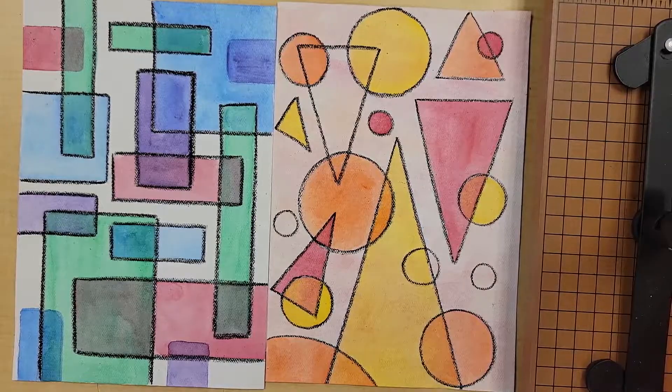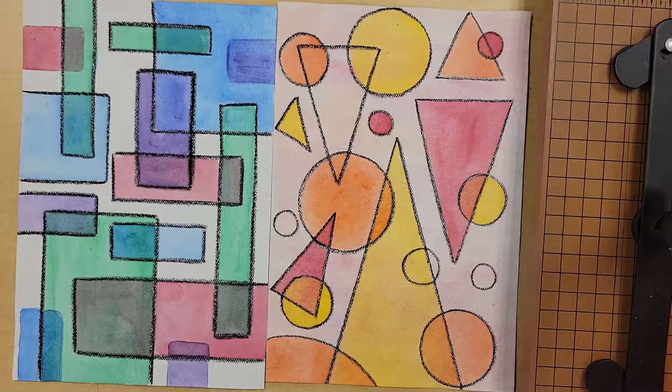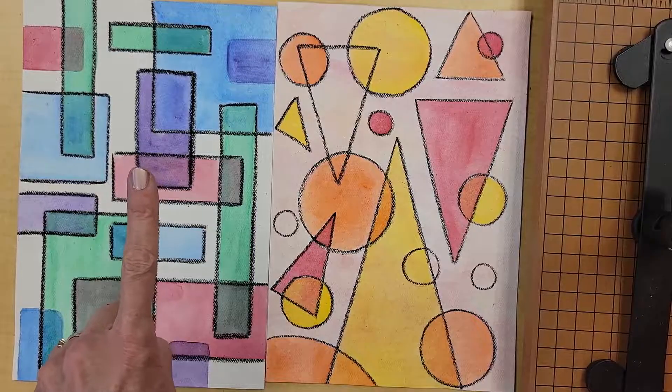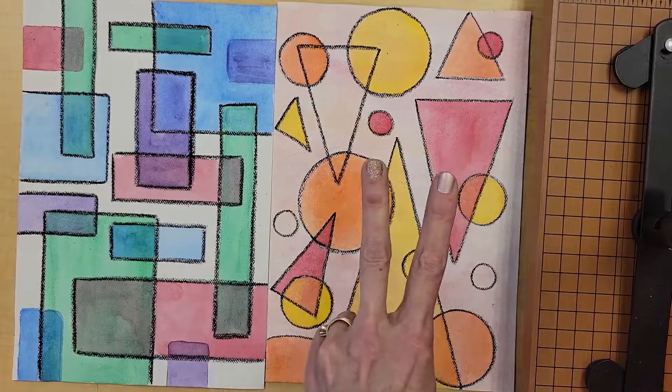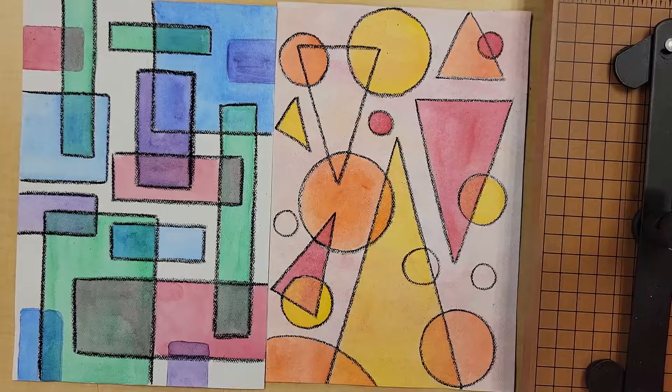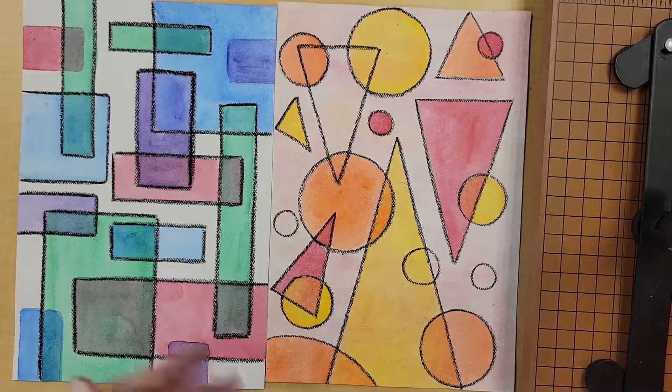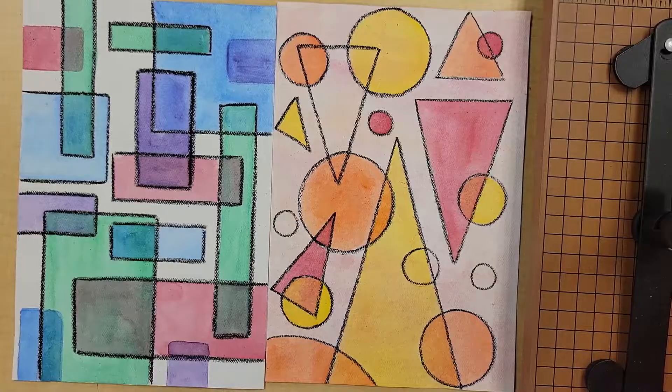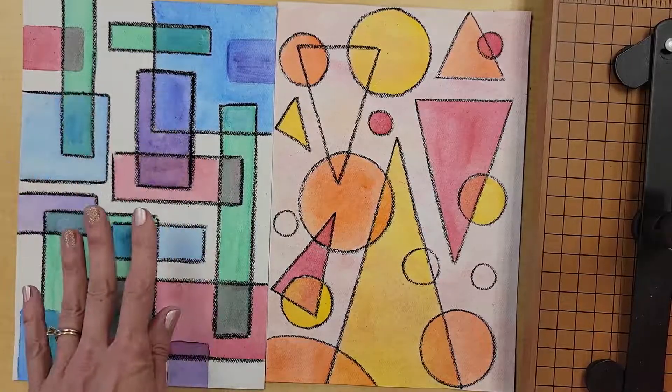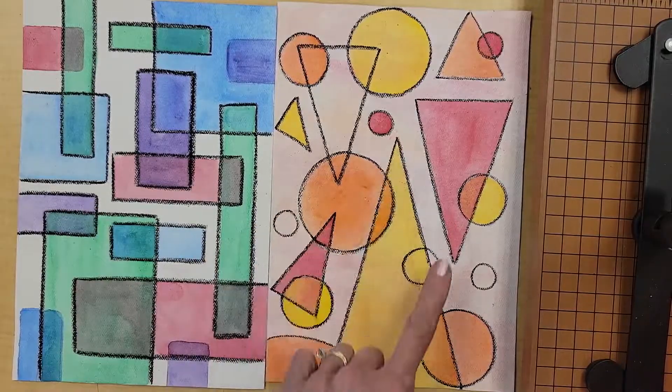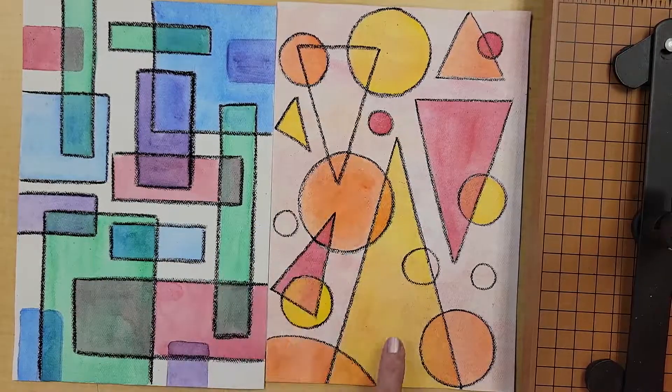So the first thing you have to decide is whether you will create a design using one shape or whether your design will use two shapes. Then once you have made that decision, you need to figure out what basic shape you will use. Here you can see I only used rectangles, and here you can see a design that I did where I only use circles and triangles.